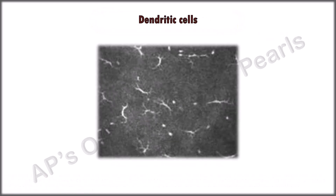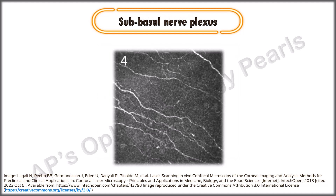In up to 30 percent of normal subjects, dendritic cells are seen in the basal epithelial cells and the Bowman's membrane, more numerous in the periphery than at the center. The cells in the center mostly have no dendrites, but develop dendrites and become more numerous in inflammatory conditions. These cells are believed to be akin to the Langerhans cells seen in the epidermis of the skin, and are commonly located close to nerve fibers as they use them for intra-epithelial movement.